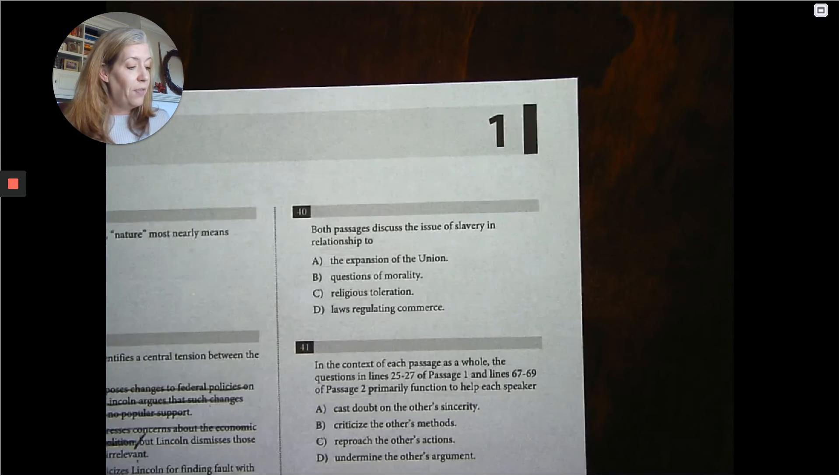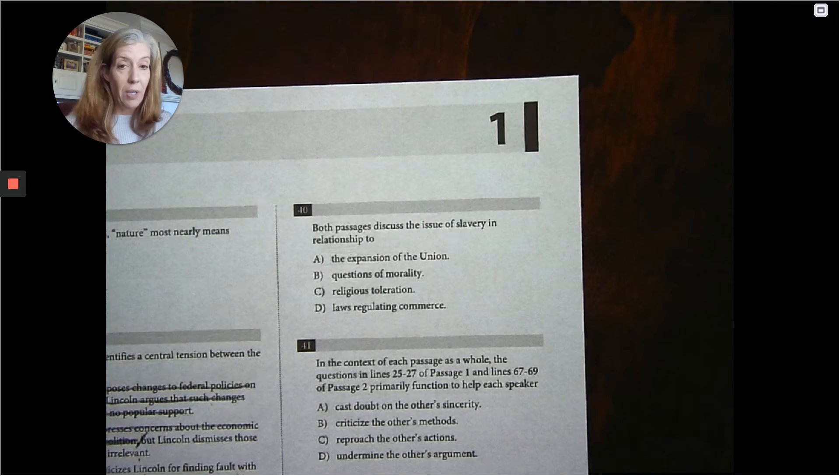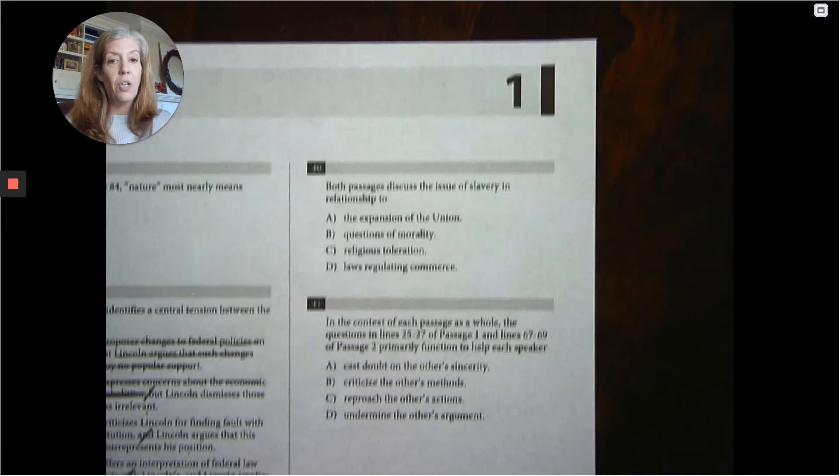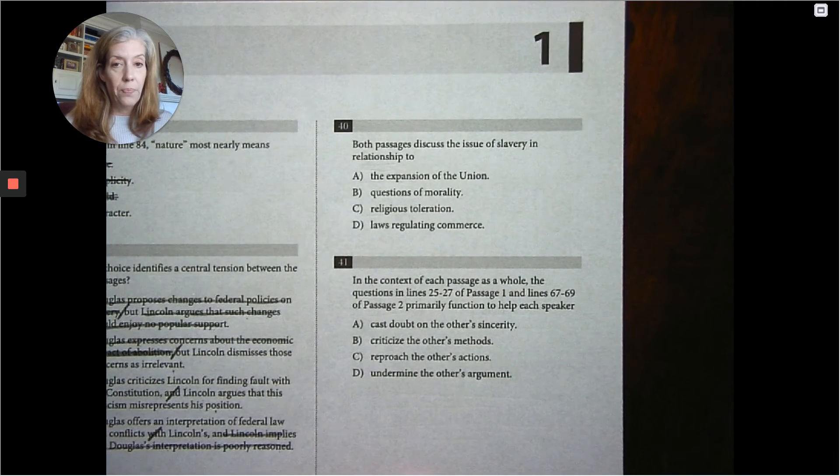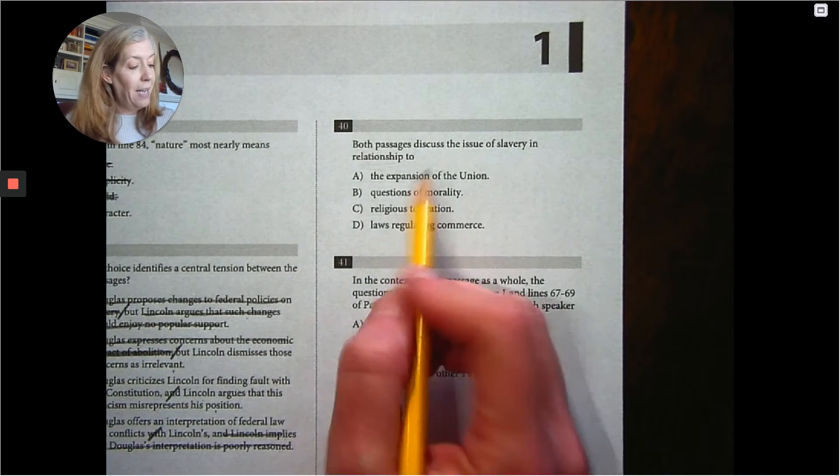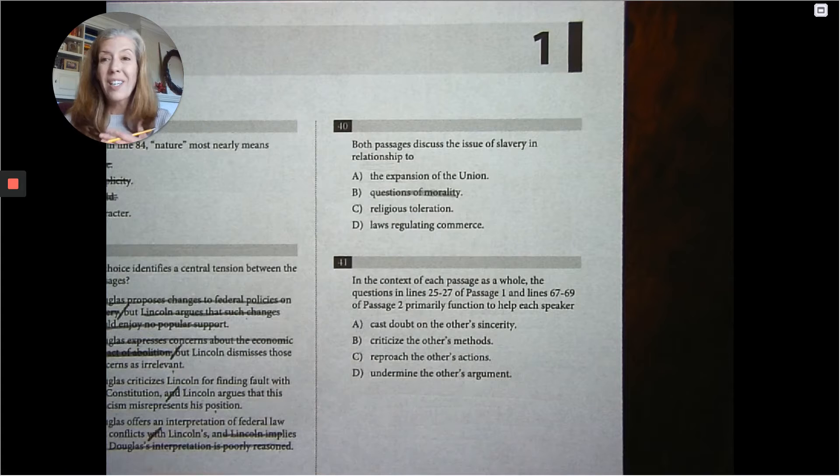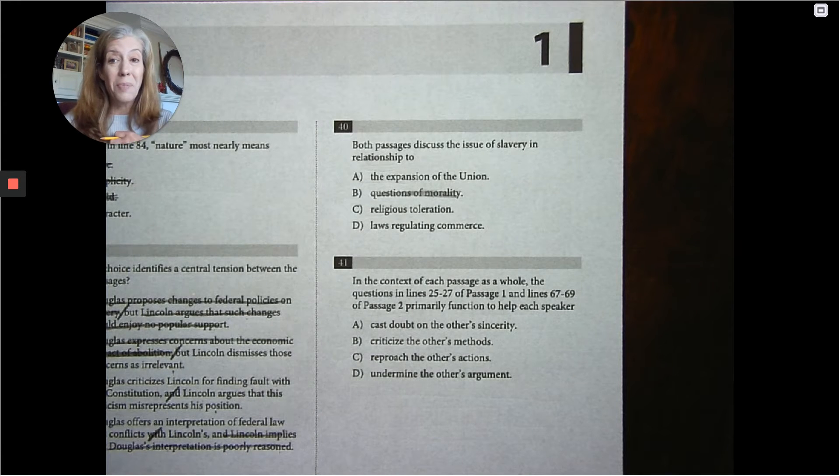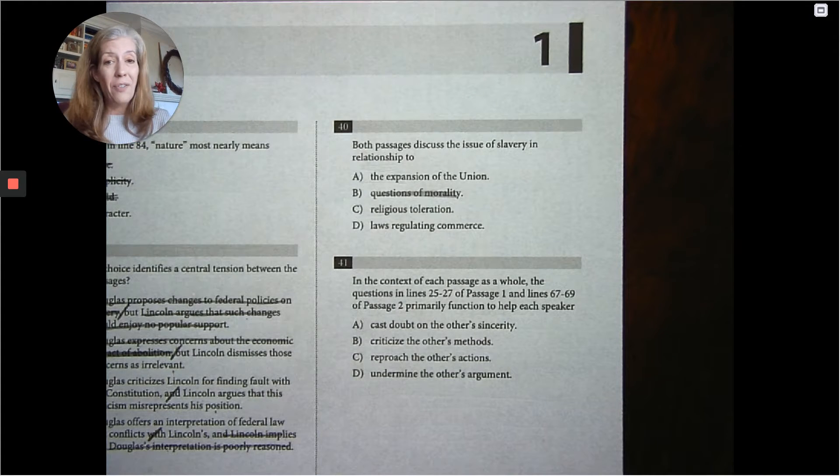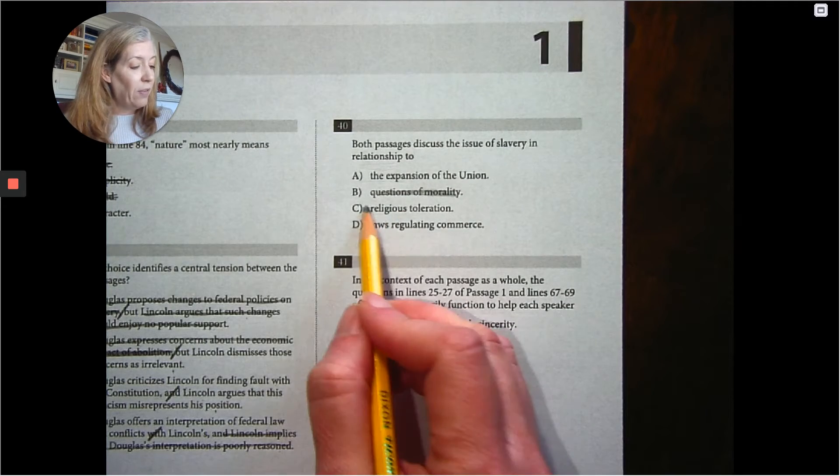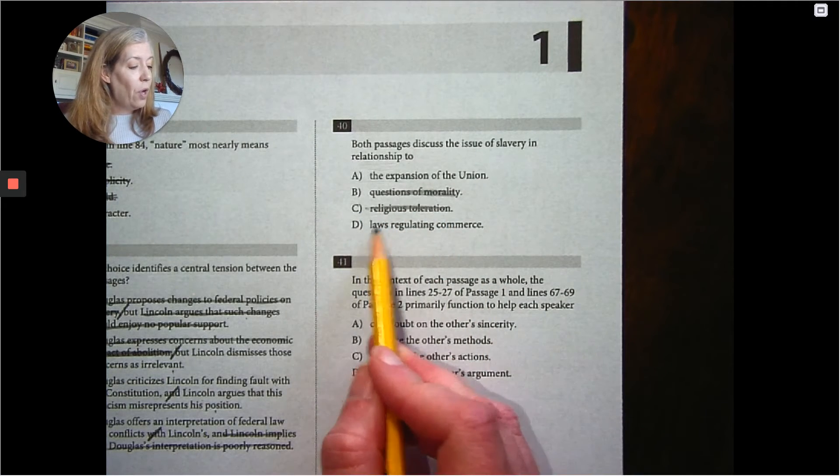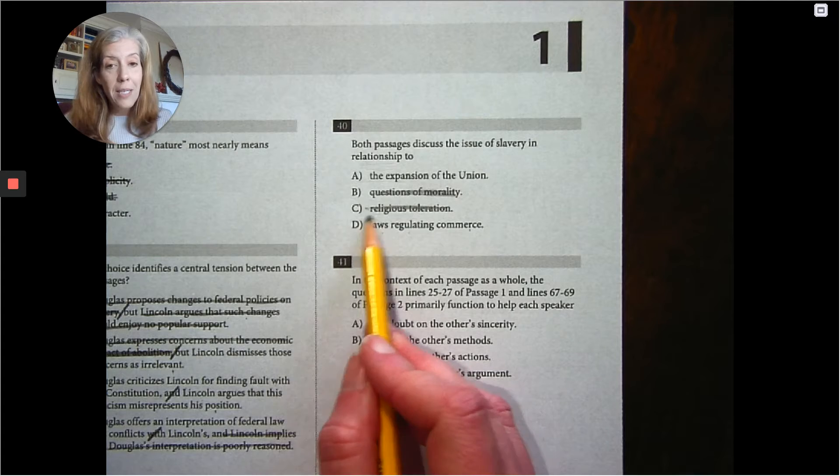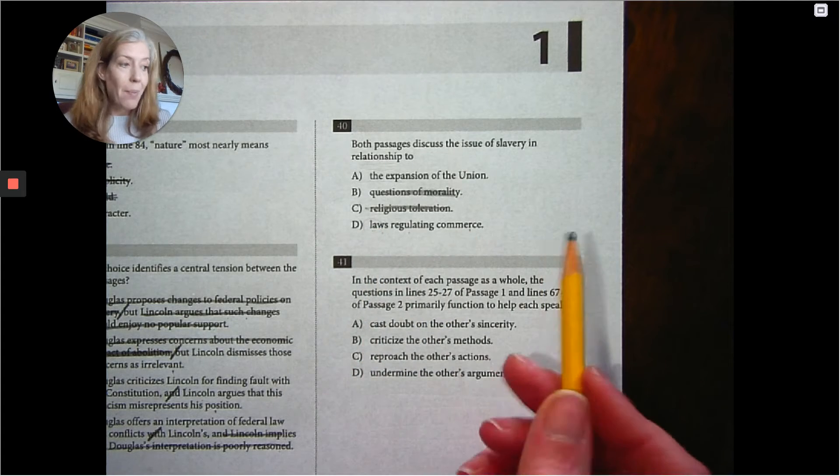Both passages discuss the issue of slavery in relationship to expansion of the union. That's true. That's true. Very true. Questions of morality. It never even comes up in the reading. We're going to think that because slavery seems like a moral issue, but never came up in the reading. Religious toleration never came up in the reading either. And laws regarding commerce. Laws? Yeah. Are they regarding commerce? No.